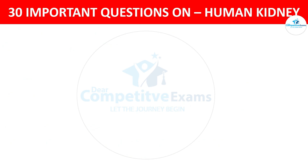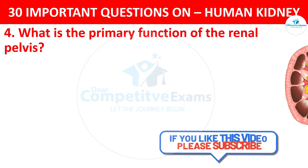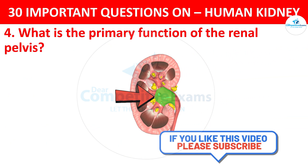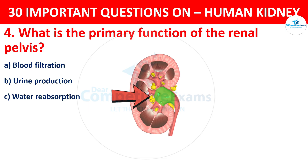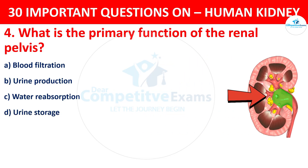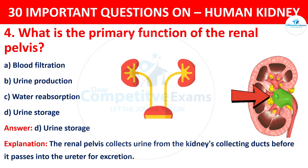Question 4. What is the primary function of the Renal Pelvis? Your options are: Blood Filtration, Urine Production, Water Reabsorption, or Urine Storage. The correct answer is D, i.e. Urine Storage. The renal pelvis collects urine from the kidneys' collecting ducts before it passes into the ureter for excretion.